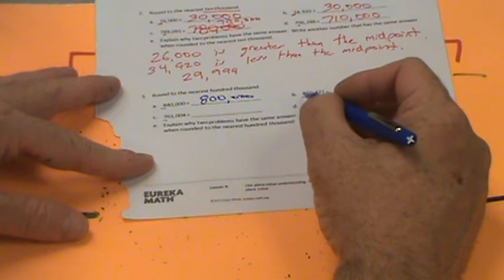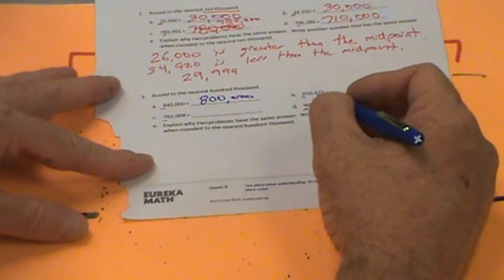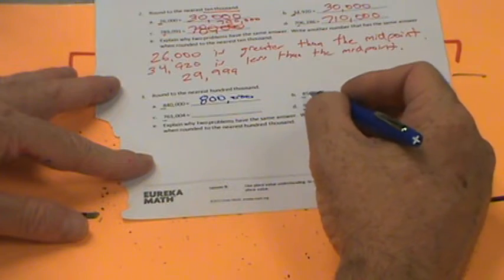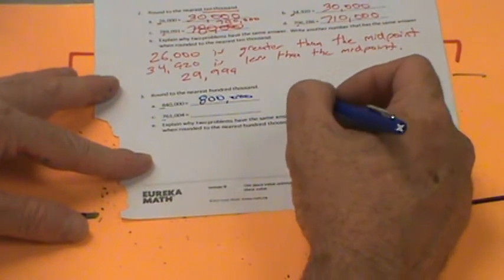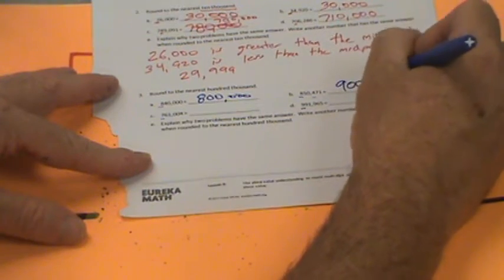Over here, 850,471. Is this greater than 850,000? It is. It's 471 greater. So we would round up. This would become a 9. Everything else is a 0.